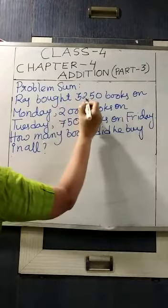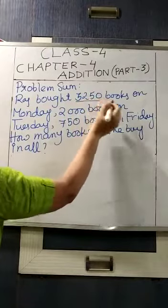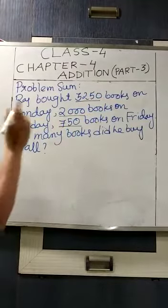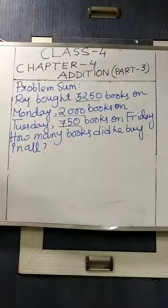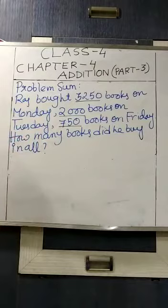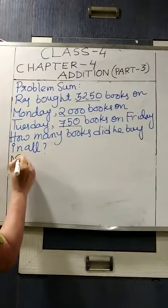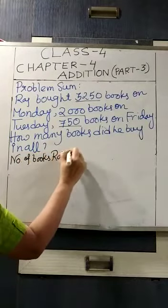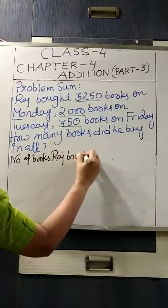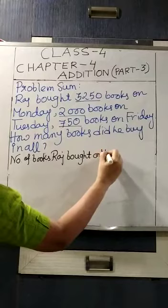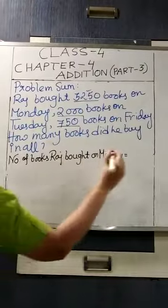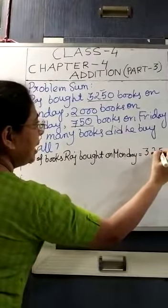So here you see that 3250 books on Monday, 2000 books on Tuesday, 750 books on Friday. So 3 sets of books on 3 days, so there will be 3 statements. Now you see how I am writing the statements. First one is: number of books Raj bought on Monday — 3250. So you have to write 3250.